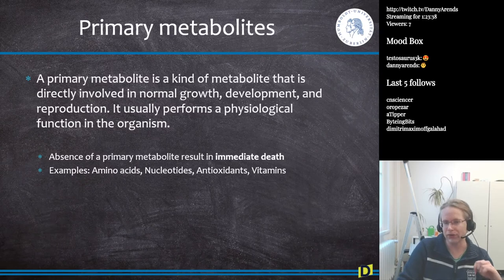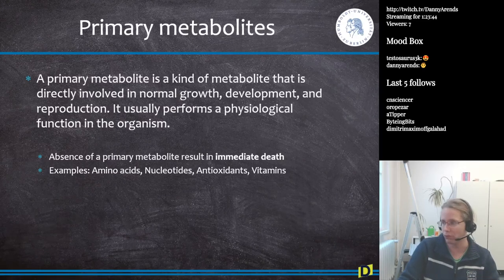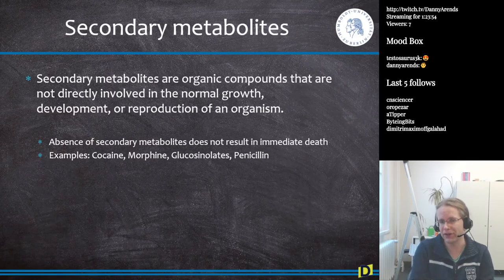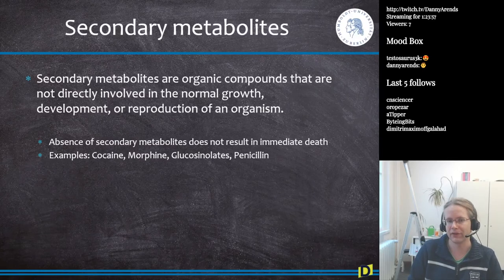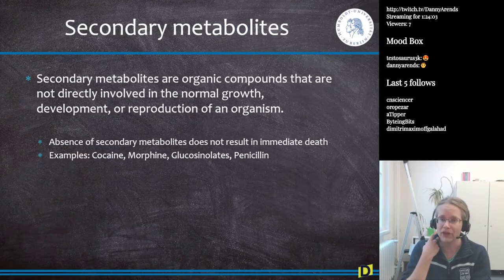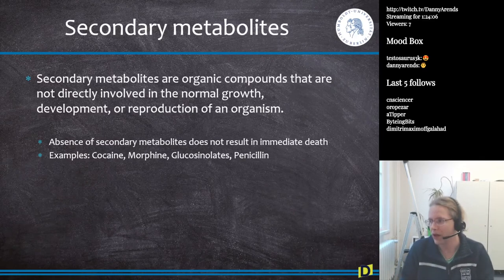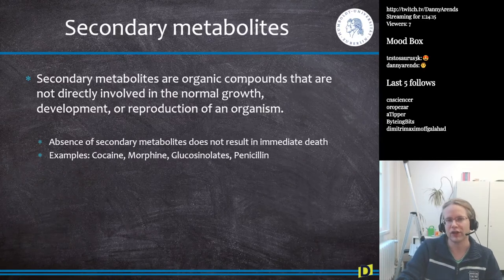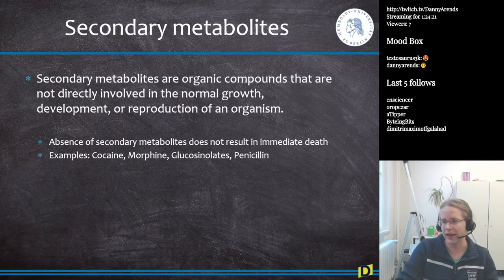If it's required for functioning as a living organism, it's a primary metabolite. Examples include amino acids, nucleotides, and antioxidants — if you don't have them, you more or less die immediately. Secondary metabolites are organic compounds not directly involved in survival; their absence does not result in immediate death. Examples include cocaine, morphine, glucosinolates, and penicillin.